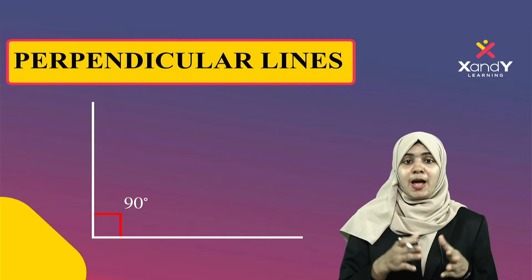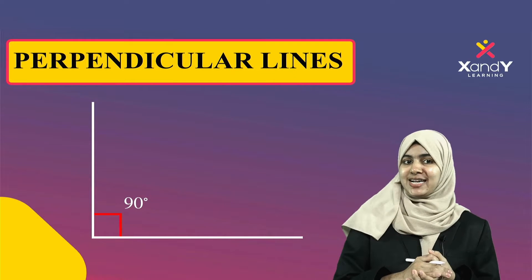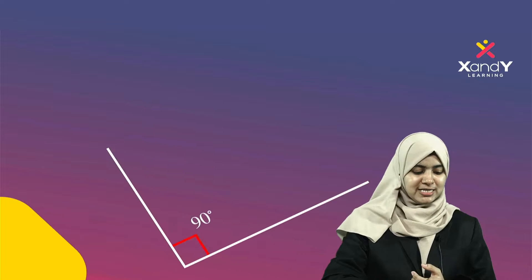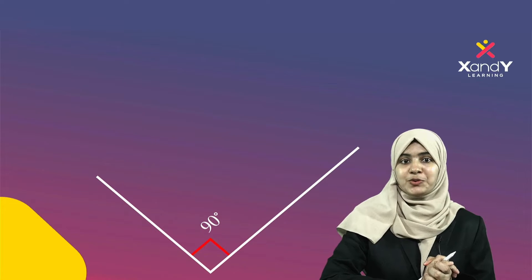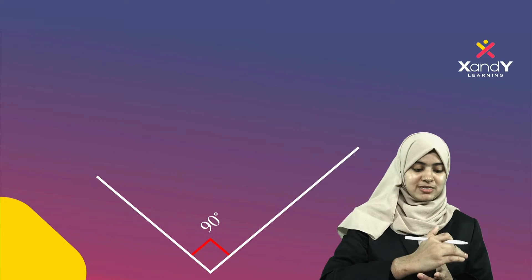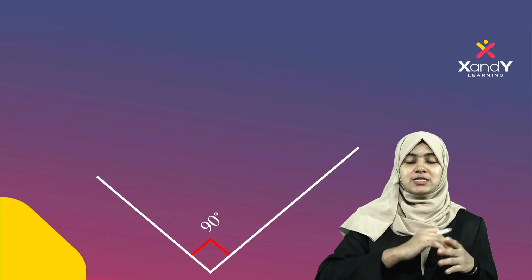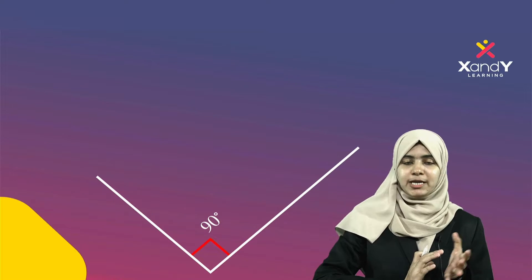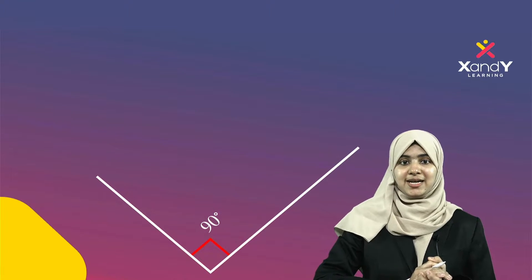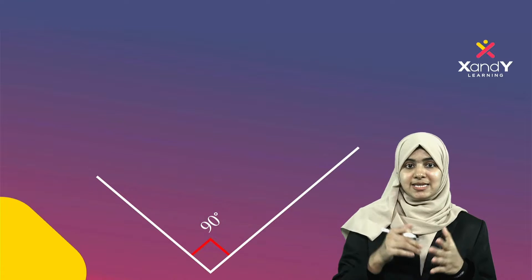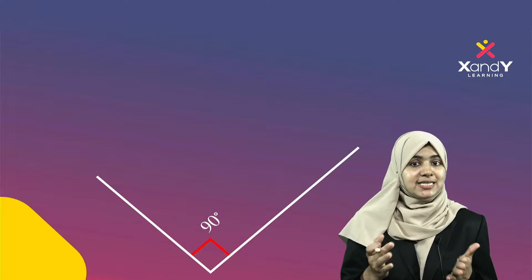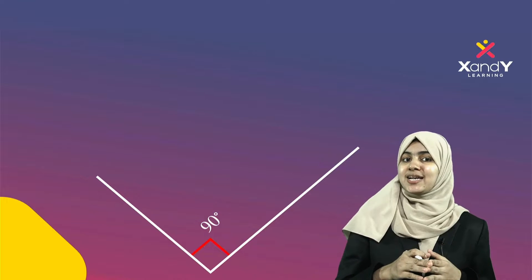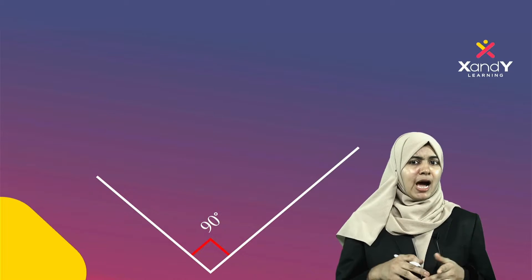What do we call Perpendicular Lines? In this case, I have a rotated angle. This is 90 degrees. If you look at the rotated angle, it is 90 degrees. So these lines are Perpendicular Lines. If two lines meet at 90 degrees, we call them Perpendicular Lines.